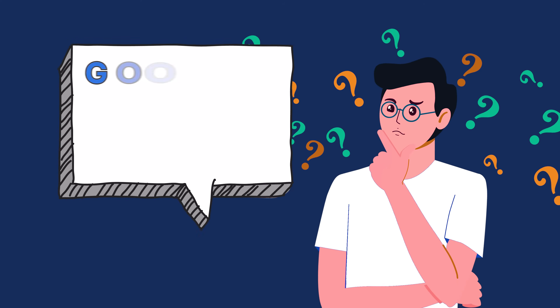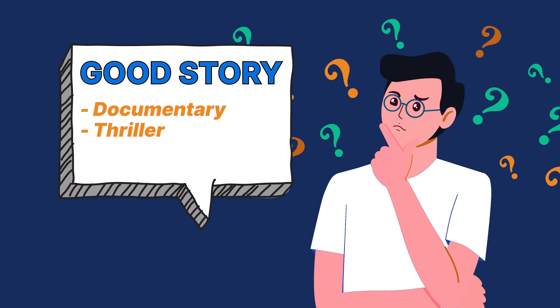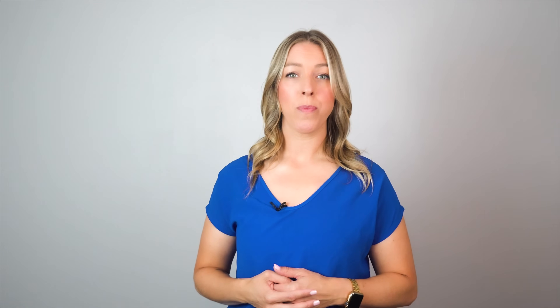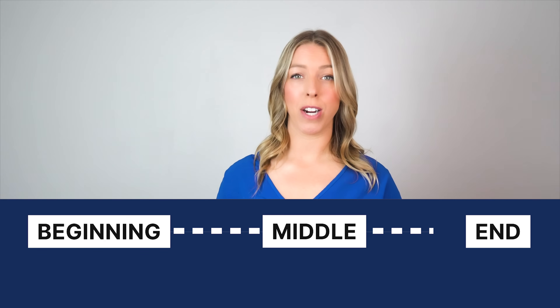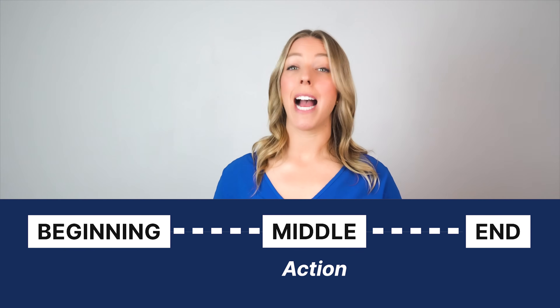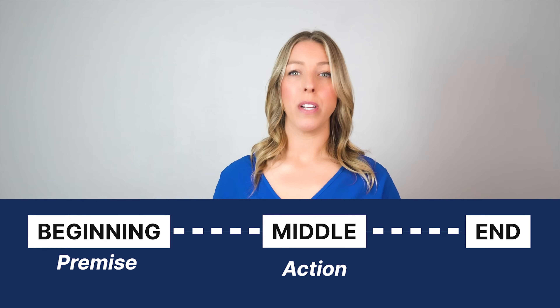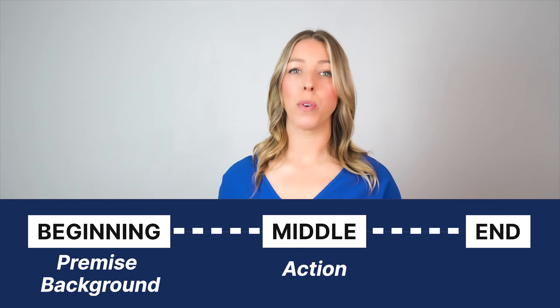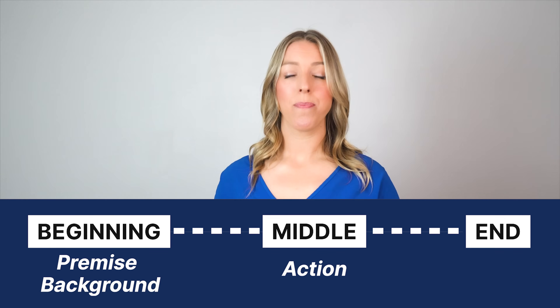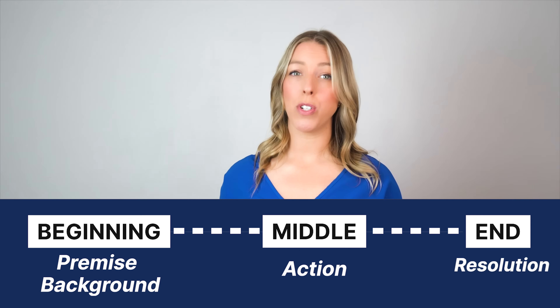When you think of a good story, it could be from any genre — a documentary, a thriller, a romantic comedy — it doesn't matter. At its core, a good story has a few key attributes. One of these attributes is a clear structure: a beginning, a middle, and an end. The bulk of the action happens in the middle. The beginning is where the premise is established — you learn a little bit about the background and context. And the end is where you see a resolution to the story.